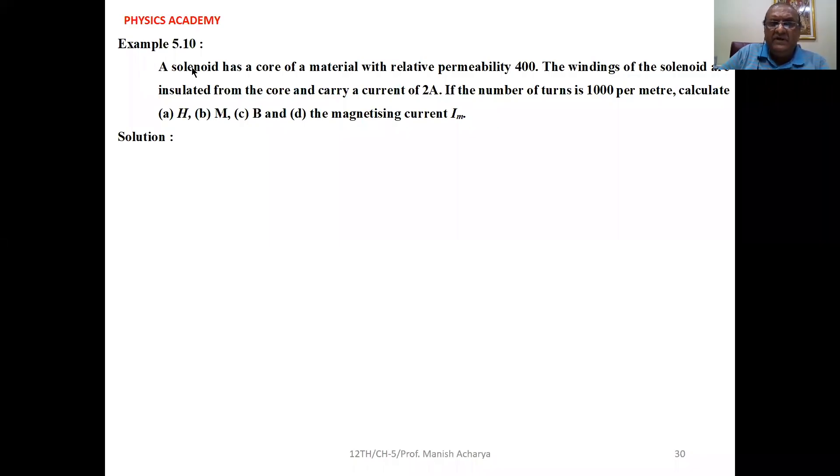Example 5.10: A solenoid has a core of a material with relative permeability 400. The windings of the solenoid are insulated from the core and carry a current of 2 ampere. If the number of turns is 1000 per meter, calculate H, M, B, and the additional magnetizing current I_M.